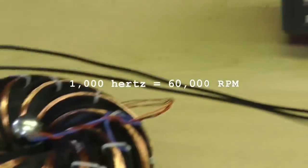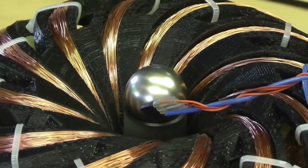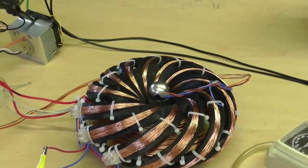Alright, a one-inch neosphere magnet spinning at 60,000 RPM. That's got to be some serious velocity on the outside of that thing.